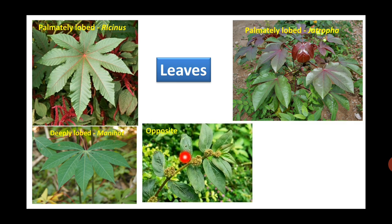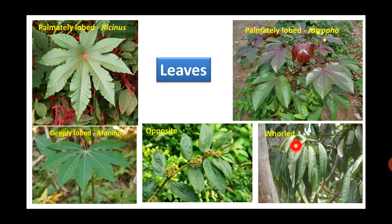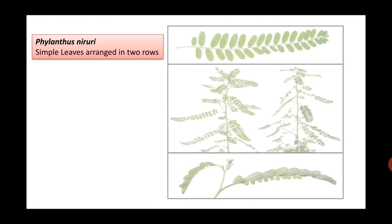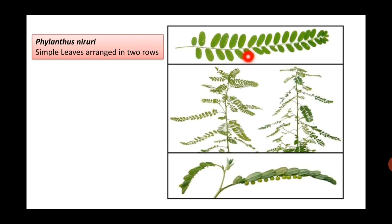Rarely, opposite leaves are seen in Euphorbia hirta, and whorled phyllotaxy can be seen in Miskodon. In Phyllanthus niruri, leaves are arranged in two rows. This resembles a compound leaf but it is not — it is a branch with simple leaves arranged in two rows.